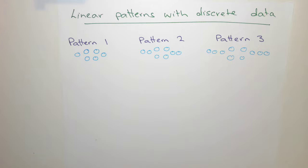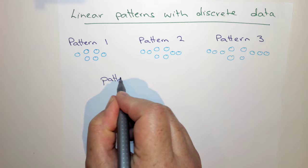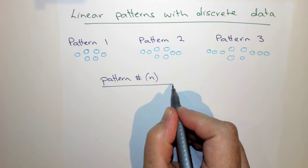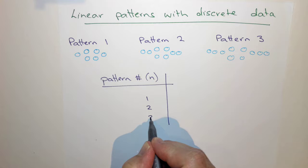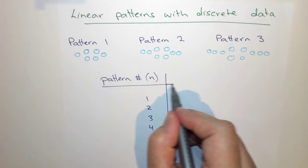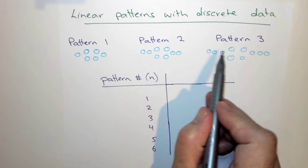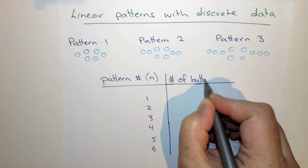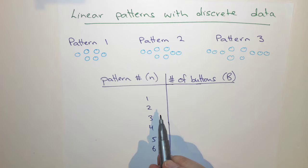So what we want to do first is turn this information into a table. Our table is going to have our pattern number, and we're going to call this n. We'll have values one, two, three, four, five, six. We're also going to have the number of buttons, and we'll call this capital B.